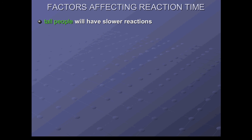Tall people will have slower reactions than shorter people, because of the greater distance the information has to travel from the performer's brain to the active muscles. Shorter sprinters tend to win 60 metre races.